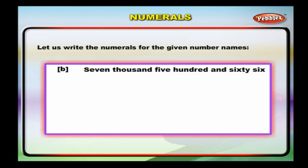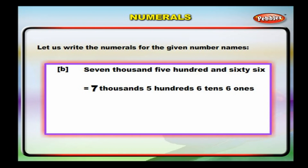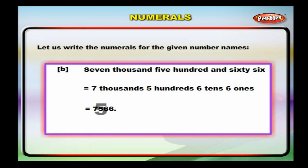Seven thousand, five hundred and sixty-six. We have seven thousands, five hundreds, six tens and six ones. We write this as 7, 5, 6, 6.